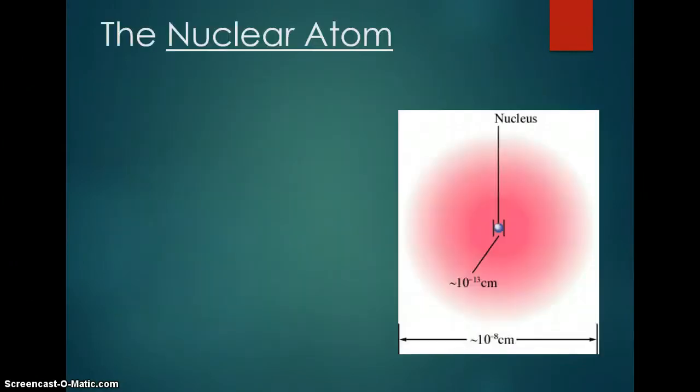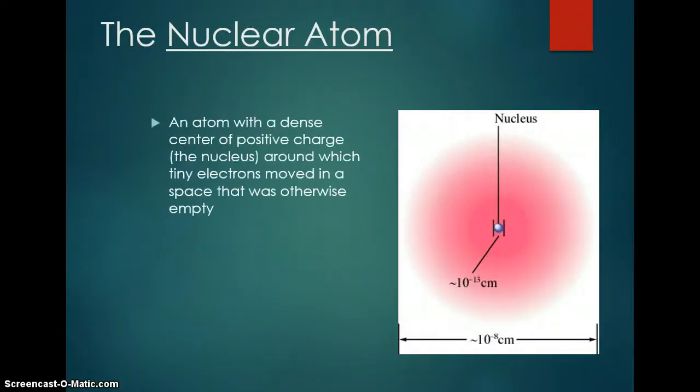So that developed this idea of the nuclear atom. An atom with a dense center of positive charge, which is the nucleus, in which tiny electrons moved in a space that was otherwise empty. So the particles could pass through, the alpha particles, as long as they pass through around here, but any time an alpha particle would hit a nucleus, because it's dense and it's positive, it would cause it to bounce off.